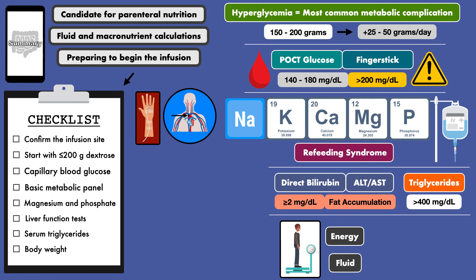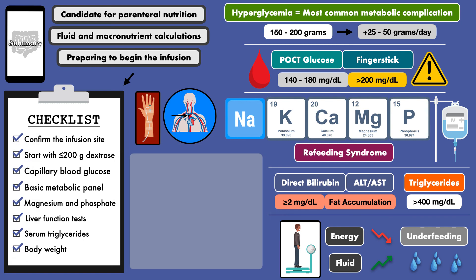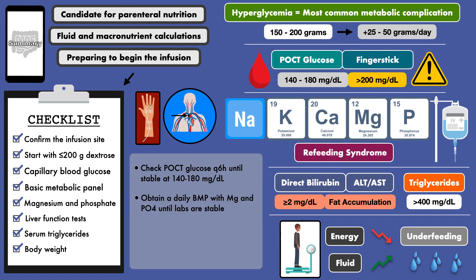For example, if the patient's body weight gradually decreases over the first week, it is possible they are at risk for underfeeding. If the weight rapidly climbs in the first few days, changes are less likely to be from fat or muscle tissue and more likely to be from fluid shifts from excessive fluid intake. Once all of these tasks are completed and parenteral nutrition has started, you can implement a plan for monitoring: check POCT glucose every 6 hours until stable between 140 and 180 mg per deciliter, obtain a daily BMP with magnesium and phosphate until labs are stable, obtain weekly LFTs and triglycerides, and obtain a daily body weight to start, then reduce the frequency to 1-2 times per week. By doing all of these things, you put yourself in the best position to give excellent nutrition care.